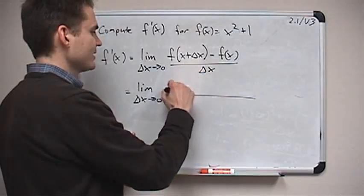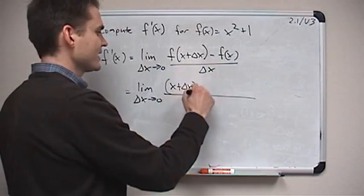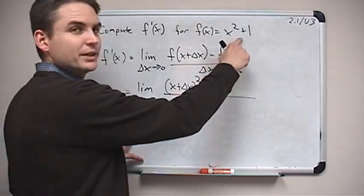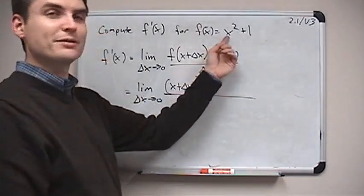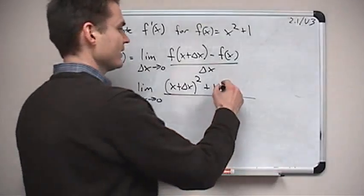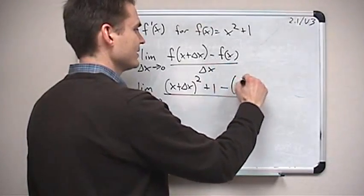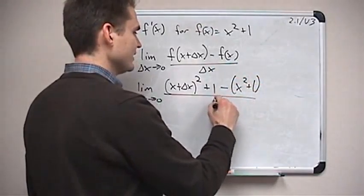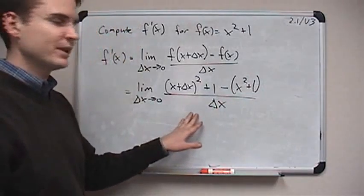So f of x plus delta x. Well, that's x plus delta x squared plus 1. Just replacing x in our function with x plus delta x. I get this. Minus f of x all over delta x. So this is the limit we'd like to evaluate.